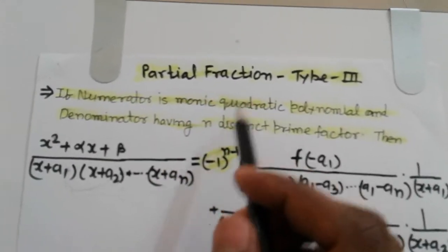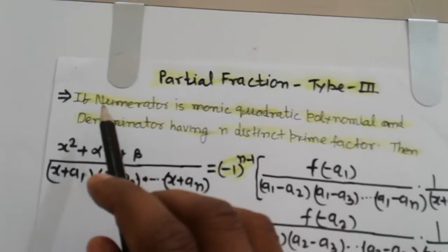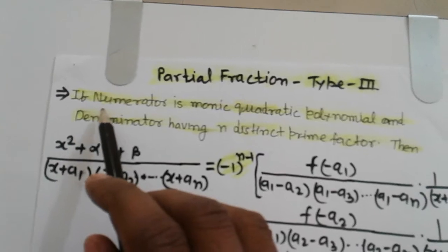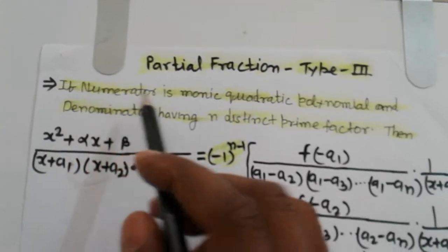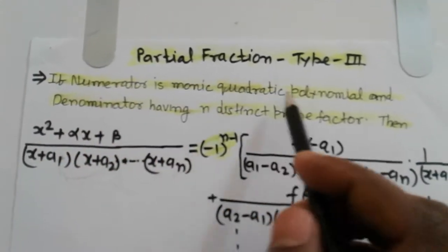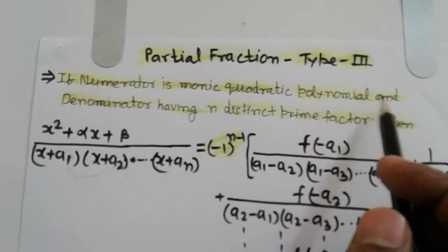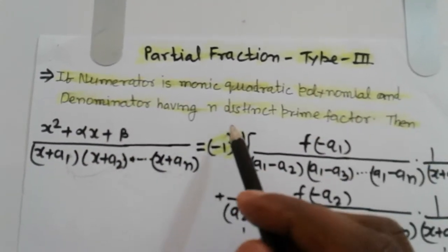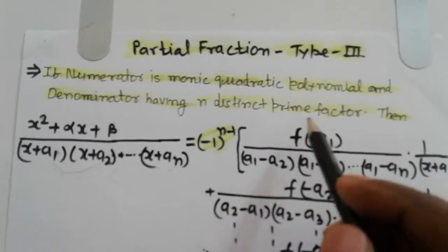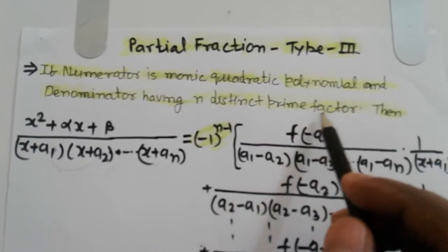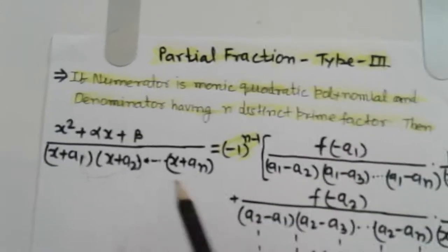Partial fractions. How to find the partial fraction if the numerator is a monic polynomial and the denominator has n distinct linear factors.